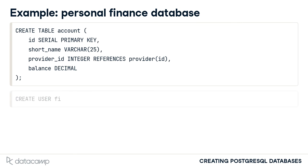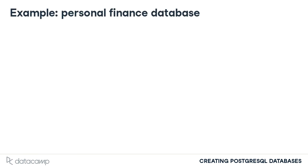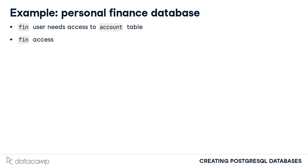Therefore, when a new user account, FIN, is created, the FIN user account does not have the ability to access or modify the account table. Access privileges can be granted for FIN based on how this user should be using the table. You want to give the FIN user the following access to the account table: the ability to add new accounts, the ability to update accounts, and the ability to query account data.